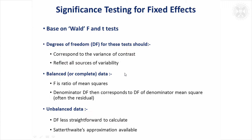The important thing about these tests is that the degrees of freedom need to correspond to the appropriate variance for the test and reflect all sources of variability. For balanced or complete data, it's going to be quite straightforward, and the denominator degrees of freedom for the F test is going to correspond to either one of the random effects fitted or to the residuals — so things are quite simple then.